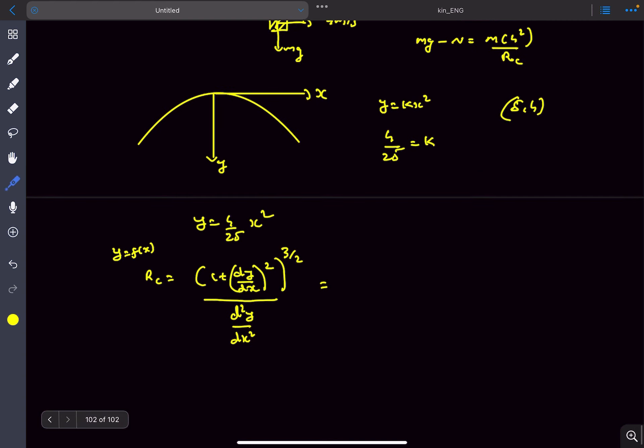Now at the topmost point, as we can clearly see, the dy by dx would be 0 as the tangent line is horizontal. We can simply say this term would become 0. So this would be 1 divided by the double derivative, 1 divided by d2y upon dx squared.